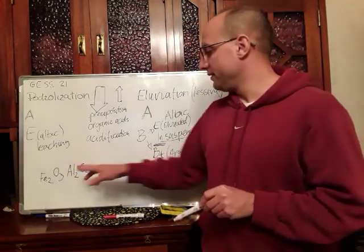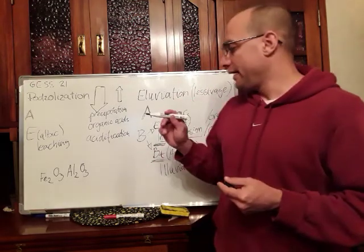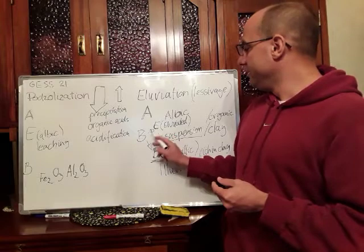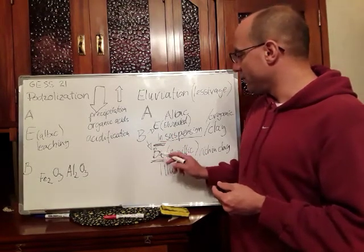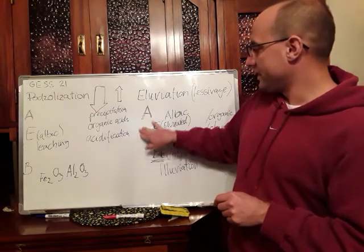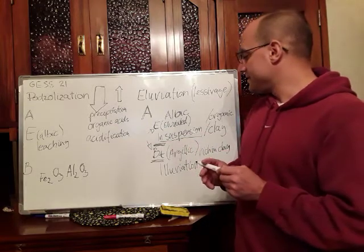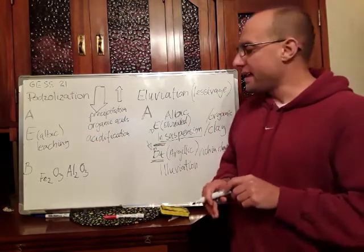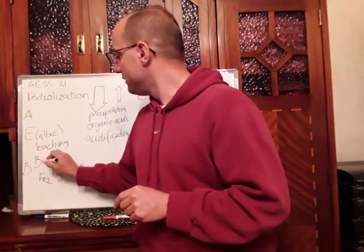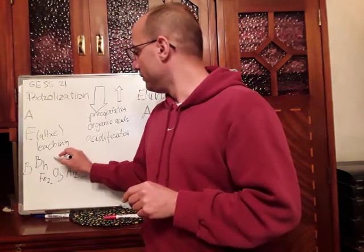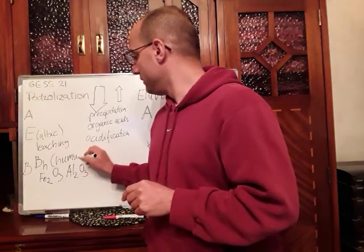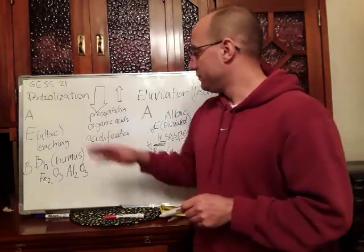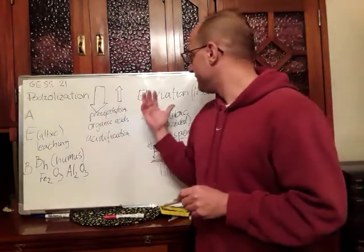And so the actual B horizon that we would find under the E, and here we see that there's actually a BT horizon that would develop, so actually I can even delete this B because it doesn't exist as such. Here we find a BT horizon and in this case for podzolization we'd have first a BH that develops with humus. I'll just put here the humus which is being washed out of the E horizon through leaching and process similar to eluviation.